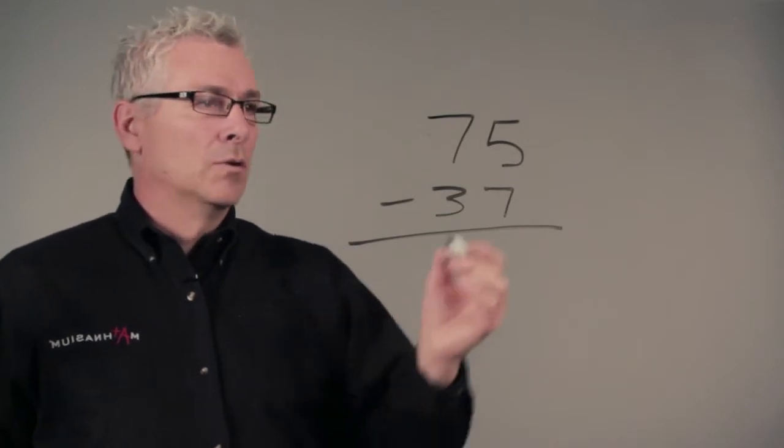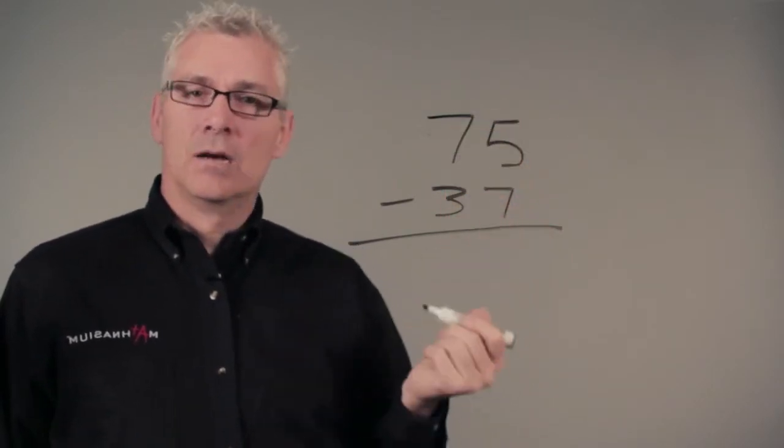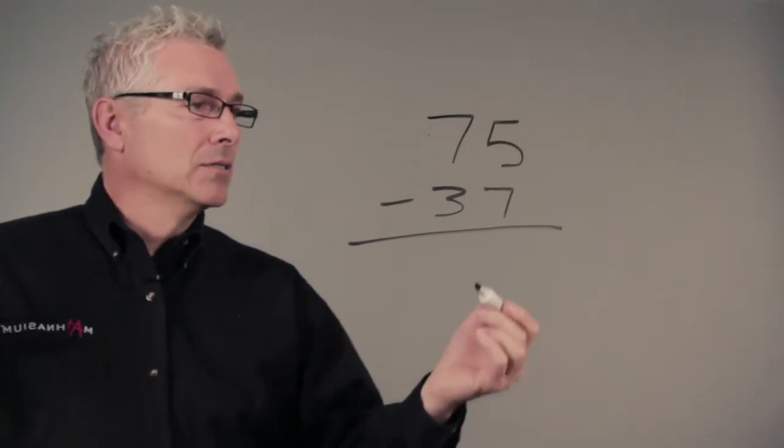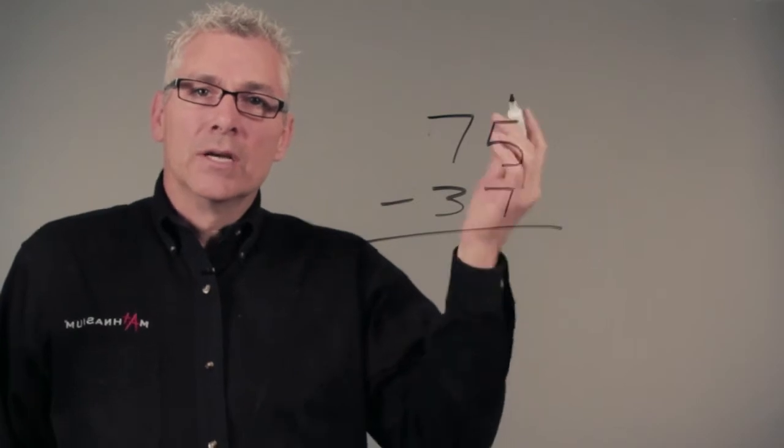Well, we notice that we put our ones on top of each other and our tens on top of each other. And when we're subtracting seven from five, we have a problem because we don't have enough.